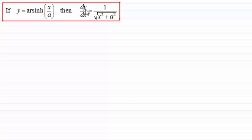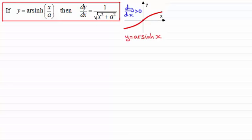It can be shown that dy/dx would equal 1 divided by the square root of x squared plus a squared. Just in case you're wondering why it's not going to be plus or minus because of the square root — if you look at the graph of y equals the inverse sine of x, you can see that the gradient is always positive.